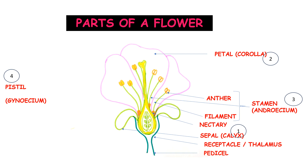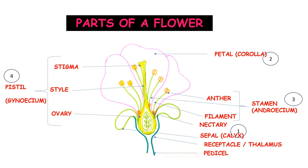The fourth whorl is the gynoecium, or the female part of the flower. It is made up of a centrally located pistil that can be formed of a single female unit called a carpel, or sometimes even fused carpels. Each carpel comprises three parts: the stigma, style, and ovary. The ovary is at the base, the style is in the middle, and the stigma is the uppermost portion. The ovary contains numerous ovules, which further develop into seeds.